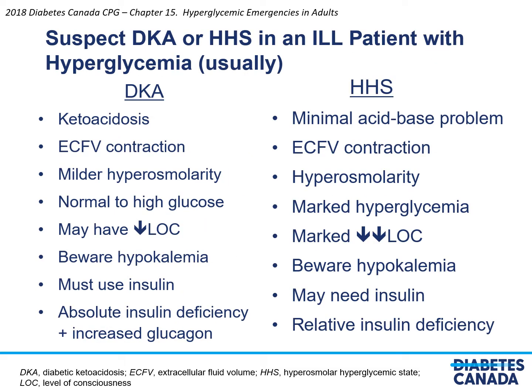We should suspect DKA or HHS in an ill patient with hyperglycemia. In DKA, you'll find ketoacidosis, ECF volume contraction, mild or hyperosmolarity, and normal to high glucose. The patient may have decreased level of consciousness. Beware of hypokalemia — this is critical to treat before using insulin, as it can harm the person. You must use insulin to treat the patient, given the absolute insulin deficiency and increased glucagon underlying the pathophysiology.